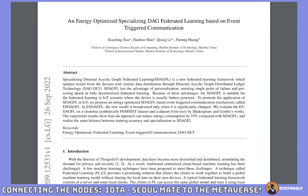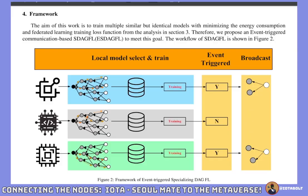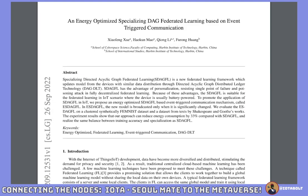I was going to end the video there but then I found another research paper. This one's called 'An Energy-Optimized Specializing DAG Federated Learning Based on Event-Triggered Communication.' It basically takes the AFL-DAG paper to a new level: instead of transmitting the local model once finished, it only transmits when it notices the local model is drastically different from the global model — helping to save energy costs. This paper is done by the Harbin Institute of Technology, which is part of what China calls its C9 League — essentially their Ivy League schools.